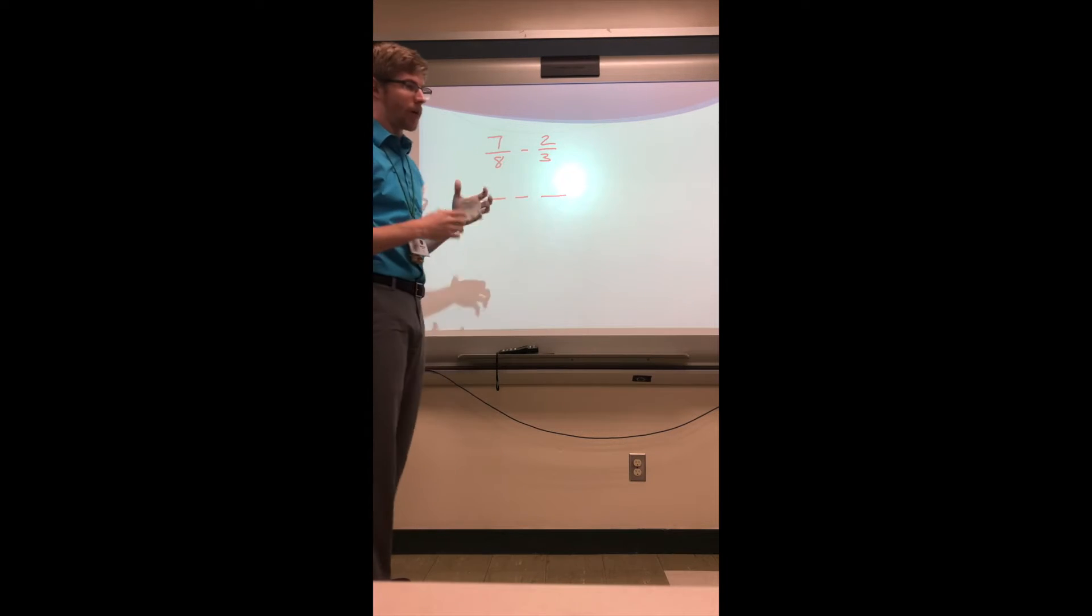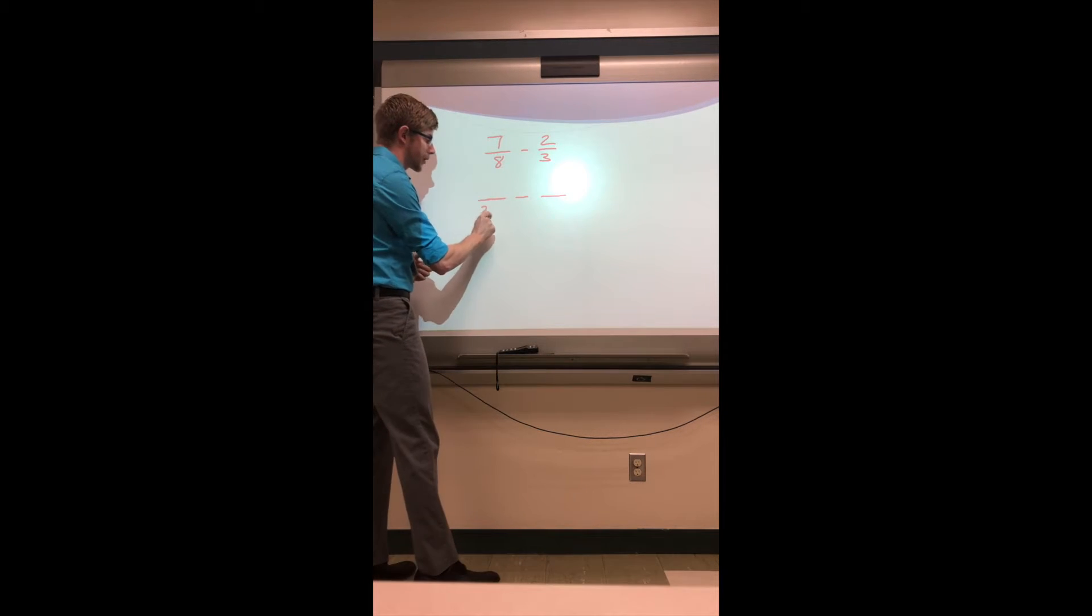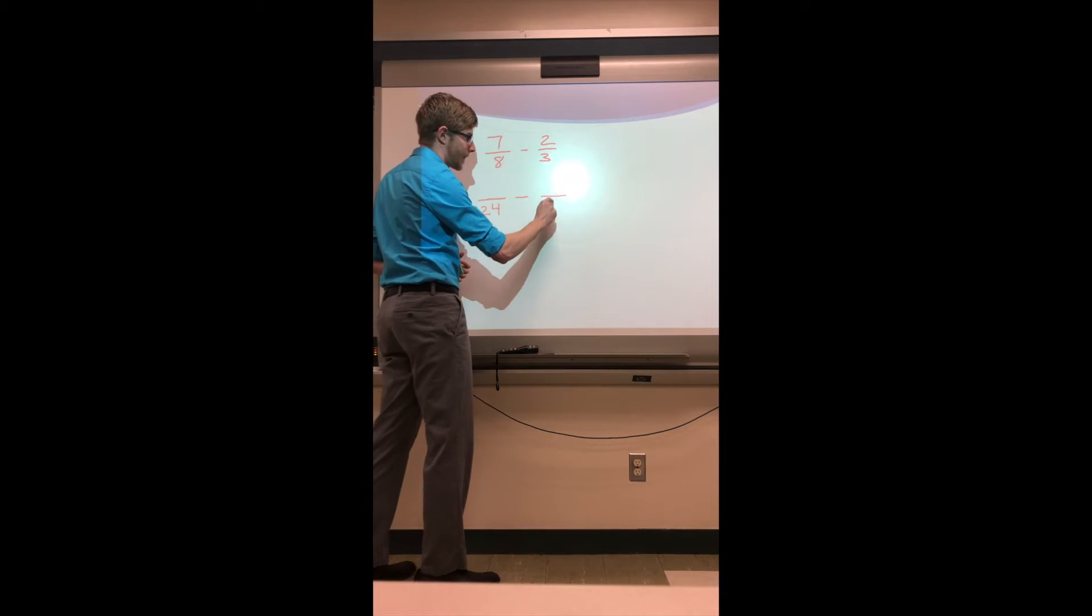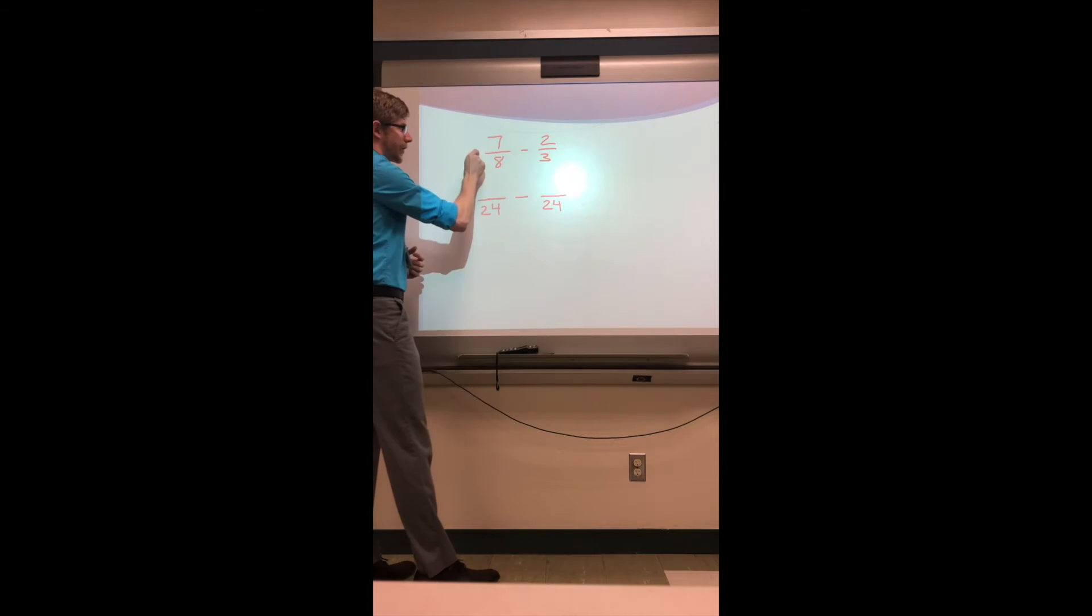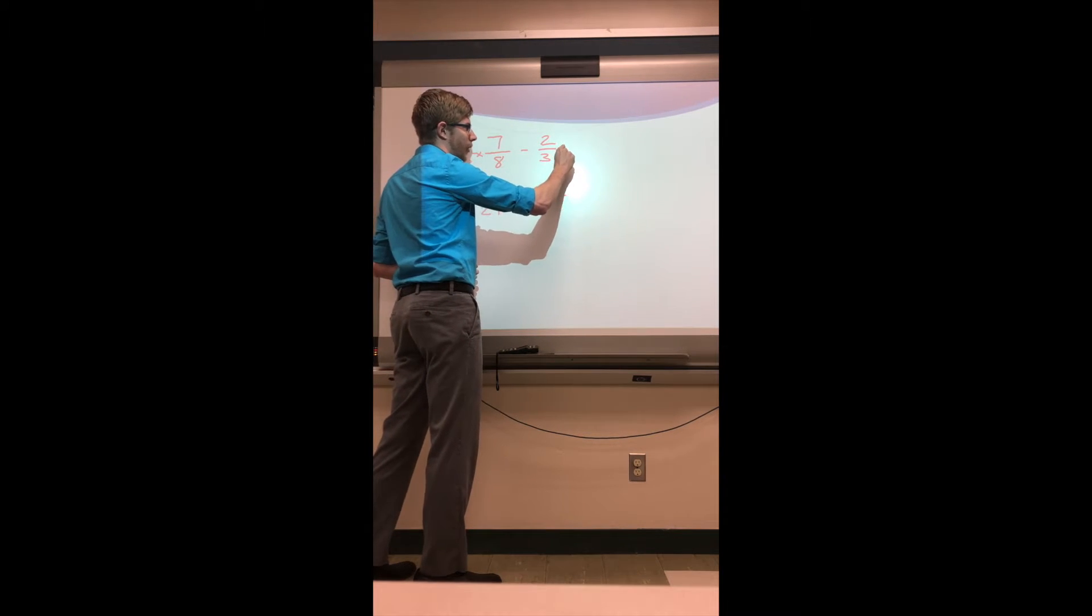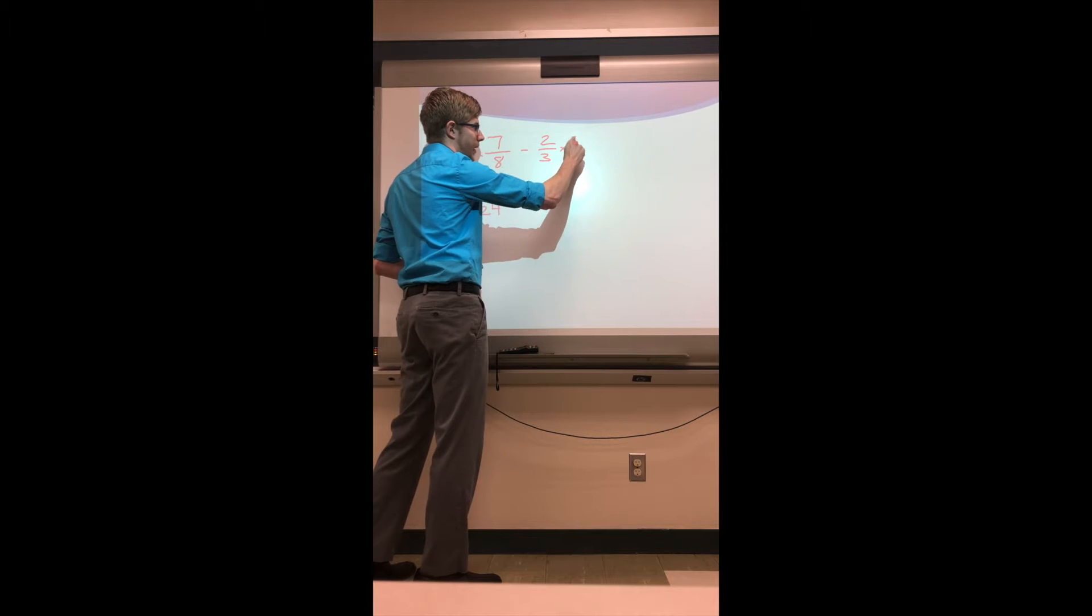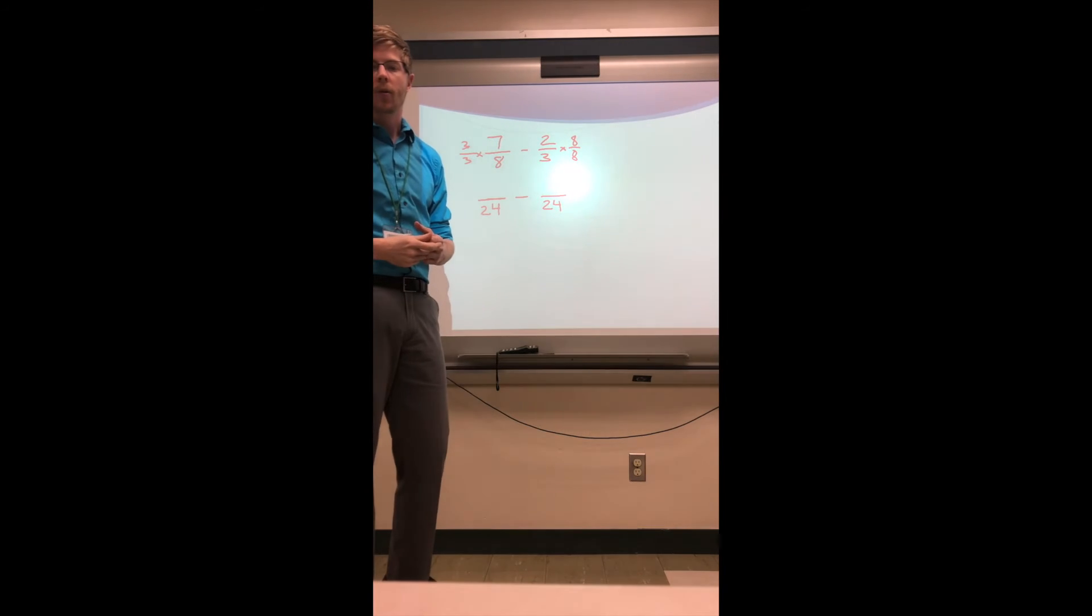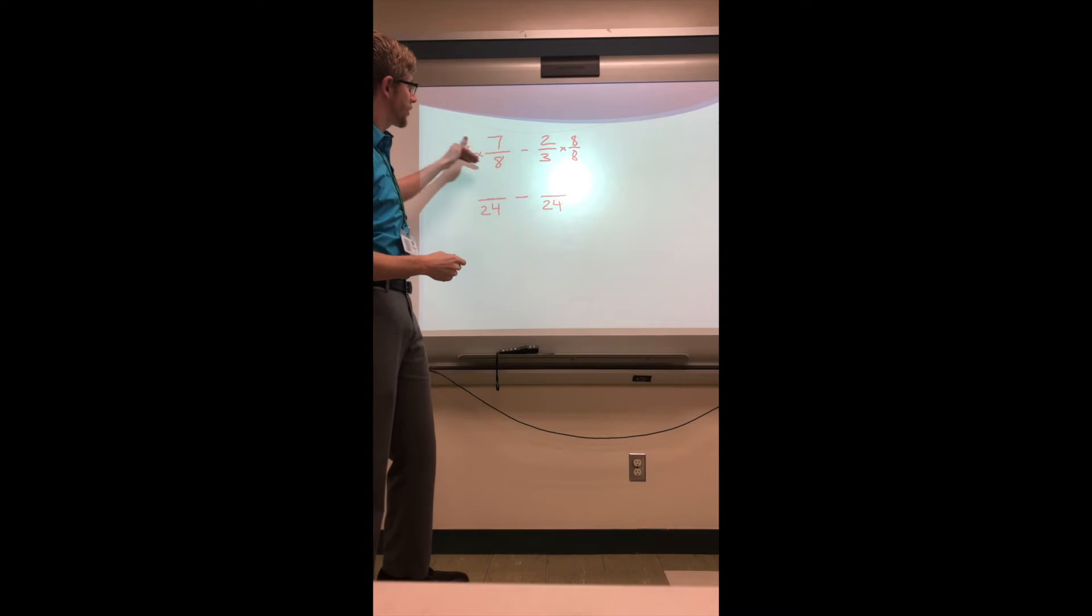And from there I'm going to think, all right, eight and three, what number can I get both of those to? And that is going to be 24. In order to get eight to 24, I would need to multiply both of these by three. To get from three to 24, I needed to multiply those by eight.